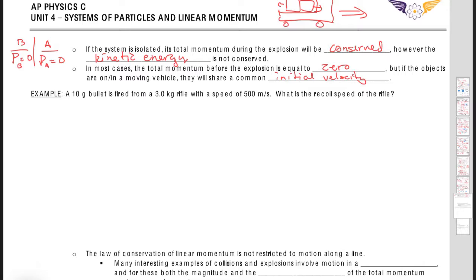Okay, so here's an example where we have a 10-gram bullet fired from a 3-kilogram rifle with a speed of 500 meters per second. What is the recoil speed of the rifle? Okay, so this is an explosive scenario. So before we pull the trigger, the bullet and the rifle are sitting. Let me put it this way.